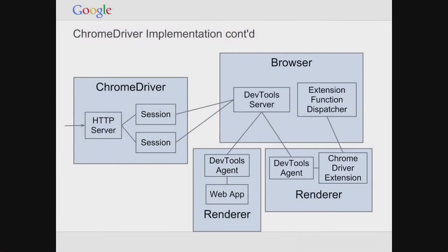Here's a diagram of the overall implementation. There's the ChromeDriver server and Chrome, which is a multi-process browser with a browser process and render processes. Commands come in through an HTTP server from the WebDriver client and are delegated to a particular session. You might have multiple WebDriver clients talking to one ChromeDriver server, each session controlling its own browser instance. Sessions talk to the DevTools server, which delegates down to particular renderers through the DevTools agent — one renderer runs your web app, and another runs the ChromeDriver extension for desktop automation.